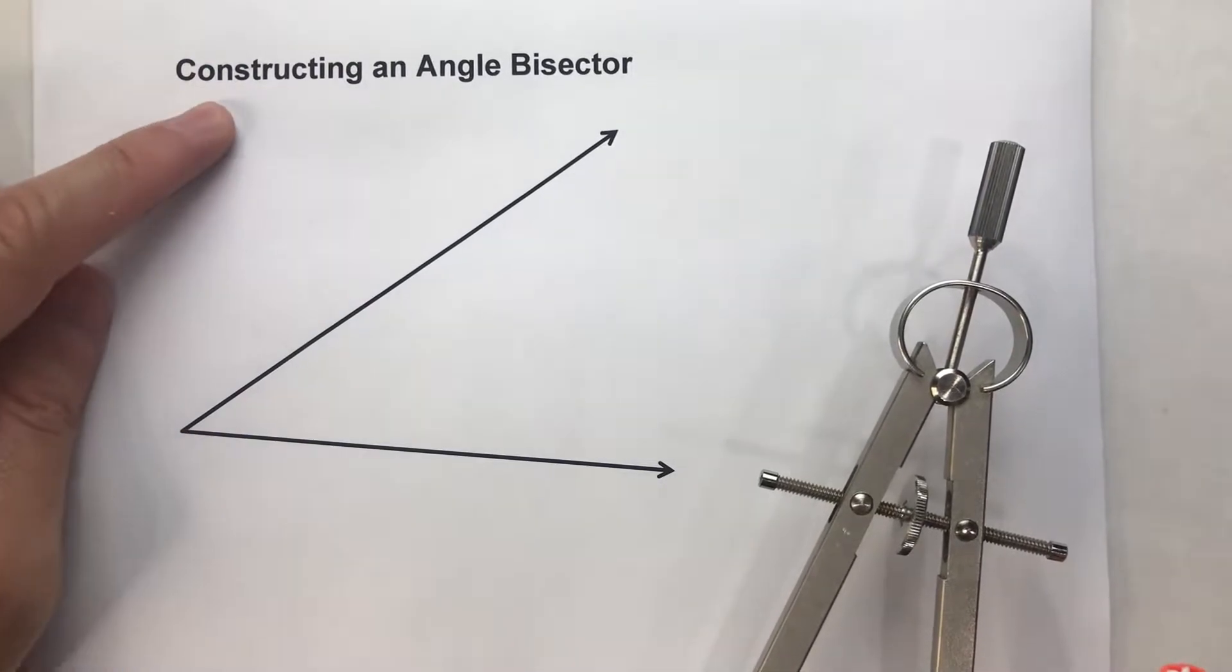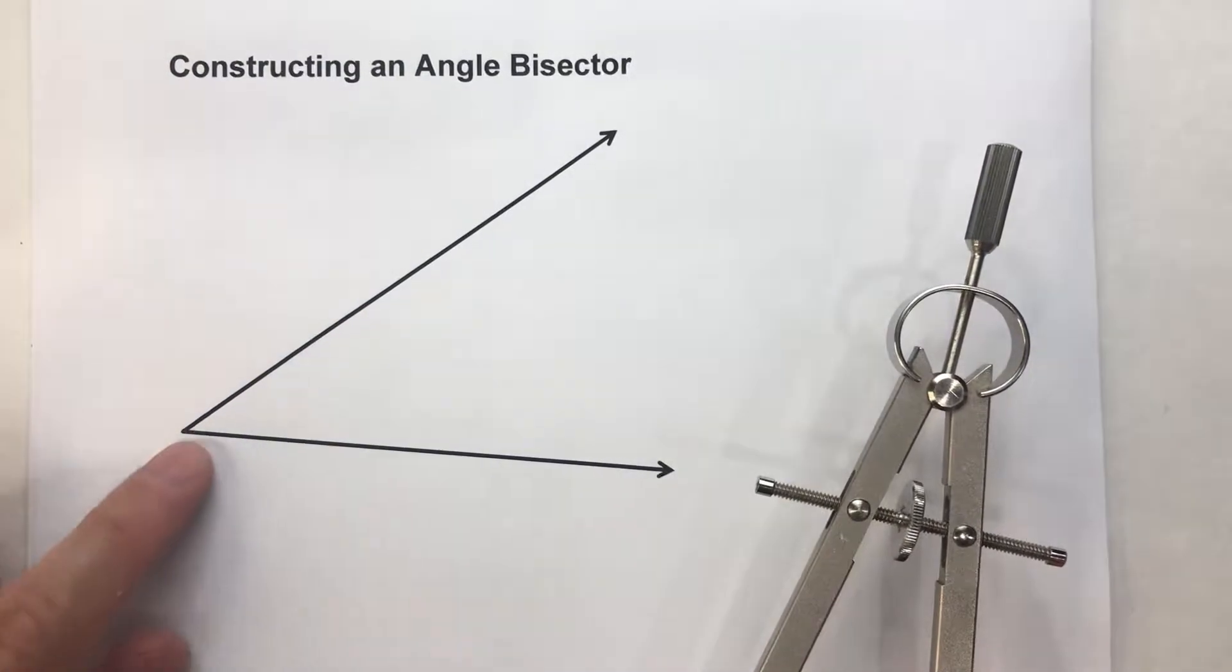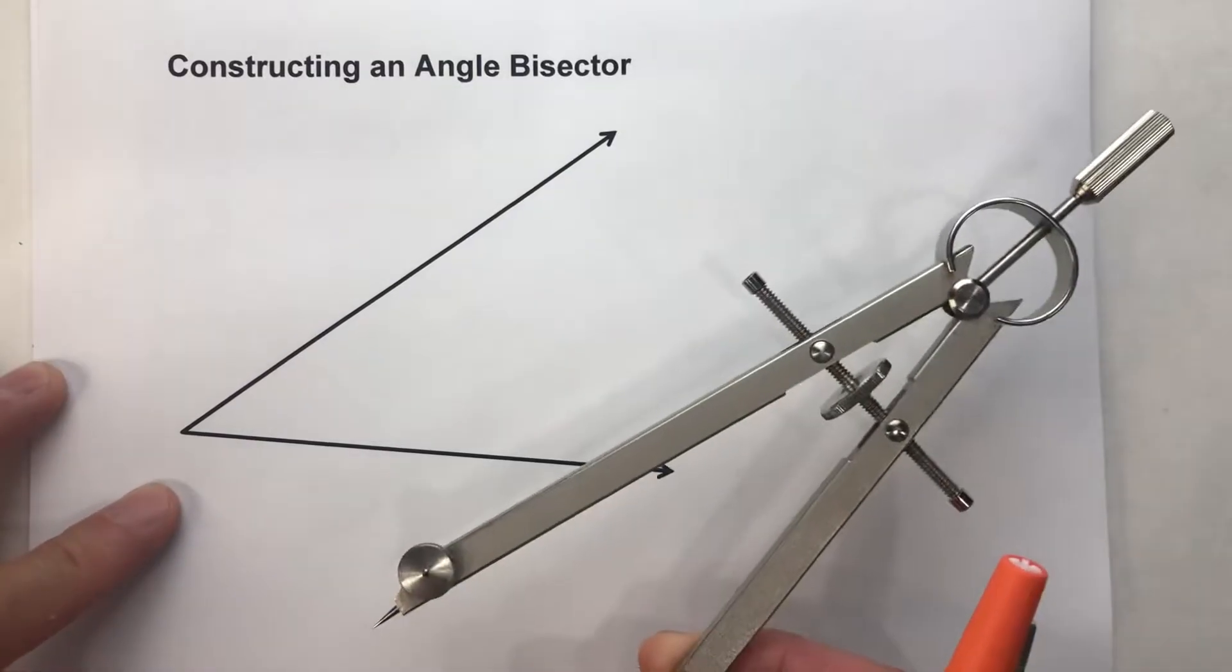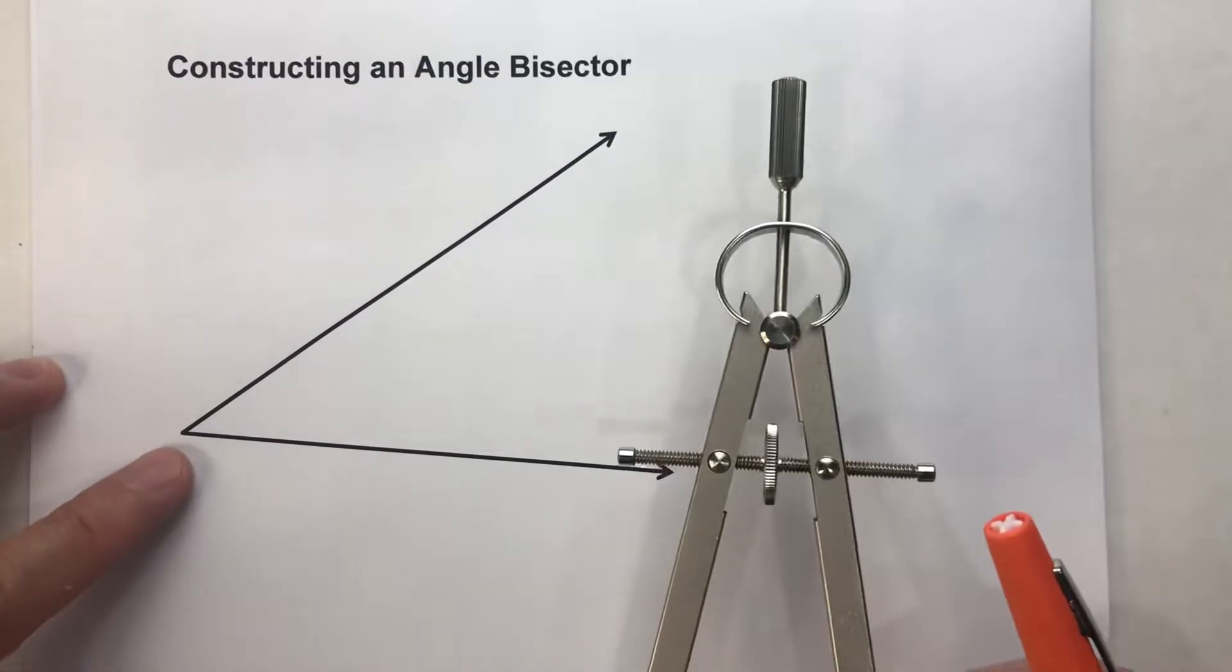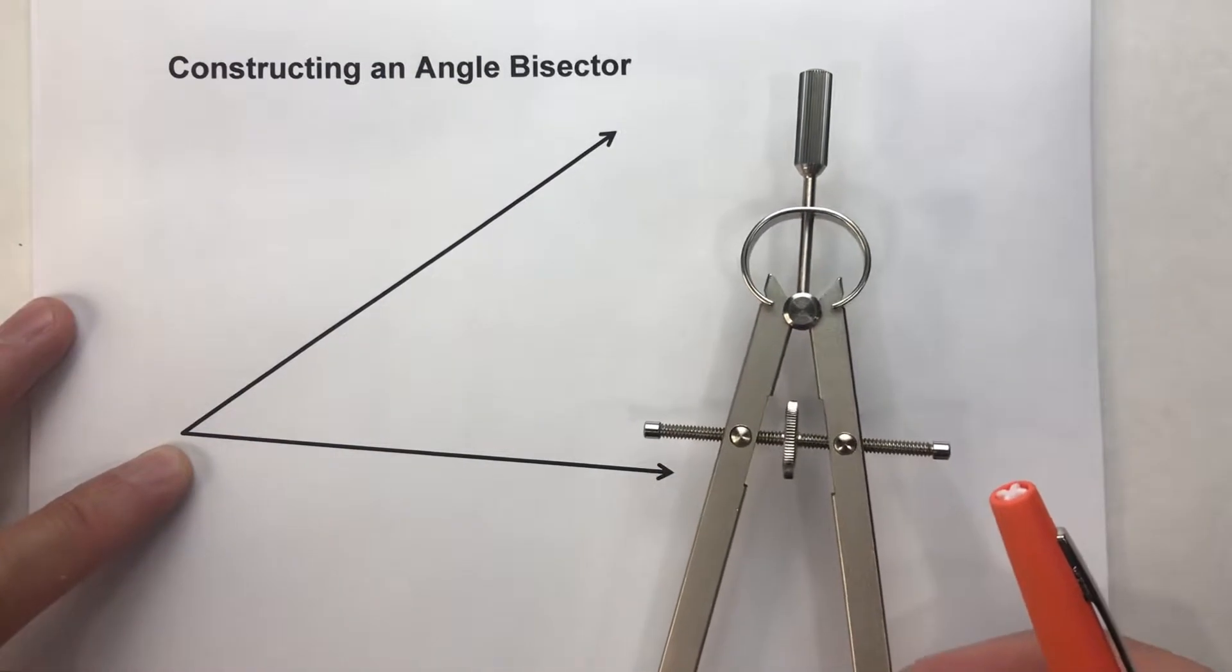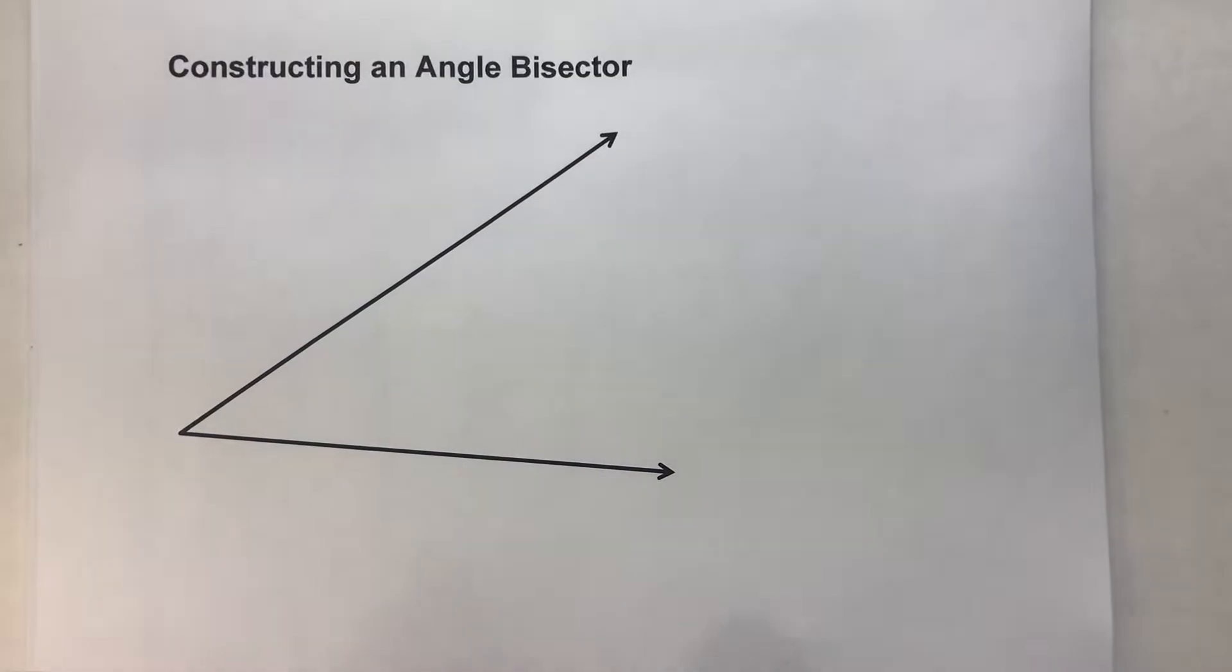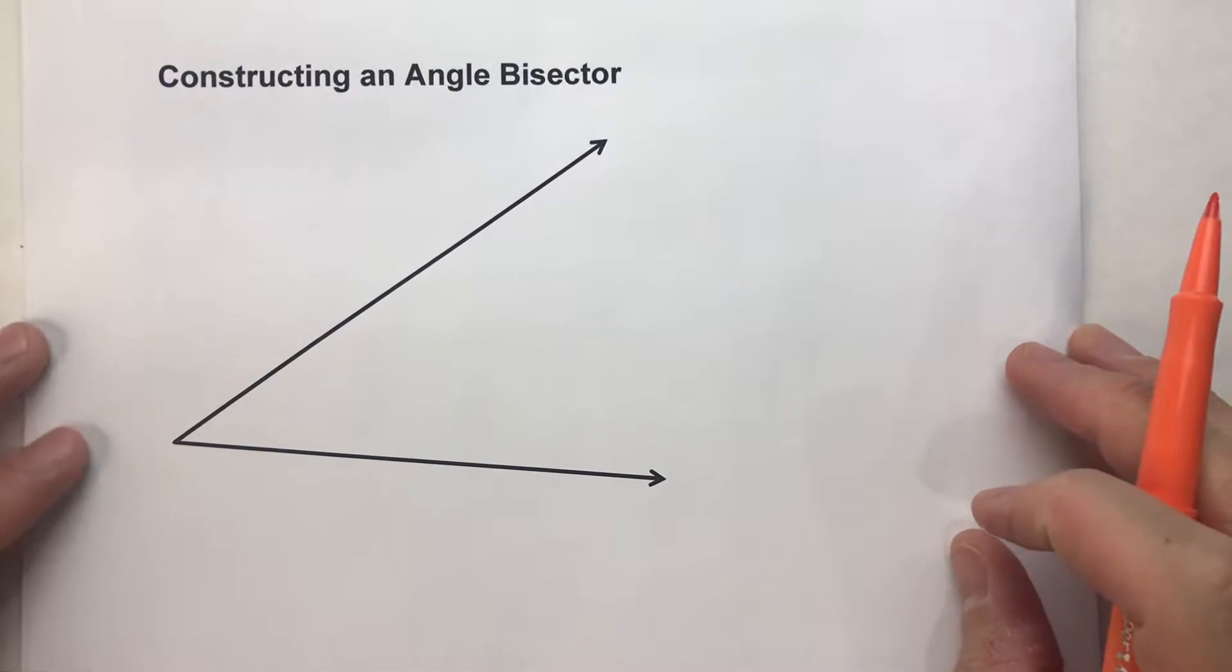So today, we're going to be constructing the bisector of an angle using a compass. Now before I do the construction though, it helps to sketch out a diagram of what we're doing so we can understand why the construction works.